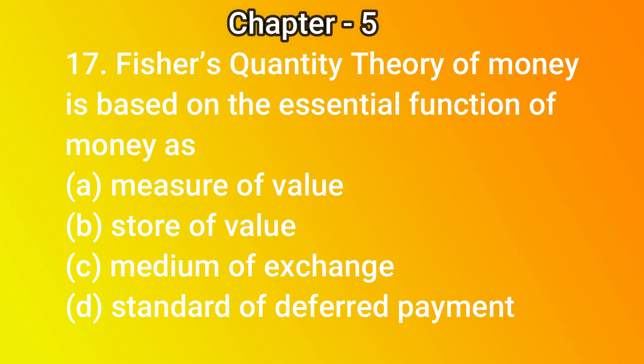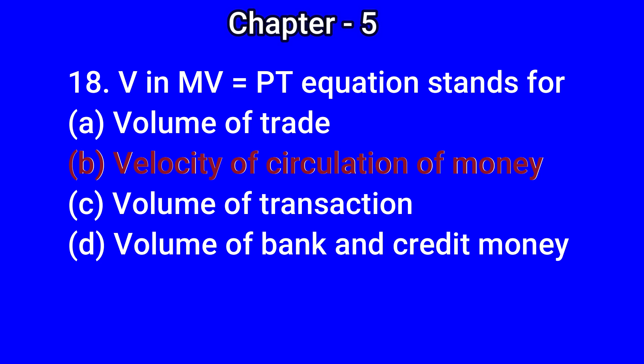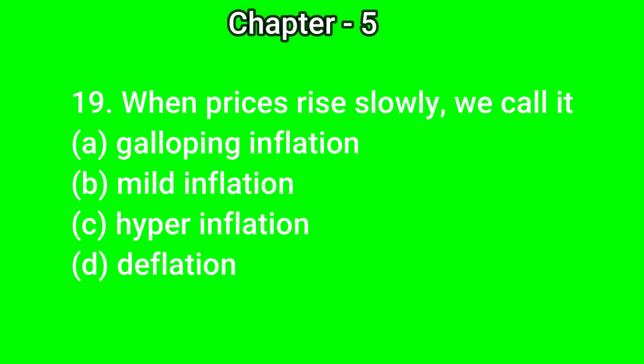Question number 17: Fisher's quantity theory of money is based on the essential function of money as — A) measure of value, B) store of value, C) medium of exchange, D) standard of deferred payments. The correct answer is C) medium of exchange. Question number 18: V in the MV = PT equation stands for — A) volume of trade, B) velocity of circulation of money, C) volume of transaction, D) volume of bank and credit money. The correct answer is B) velocity of circulation of money.